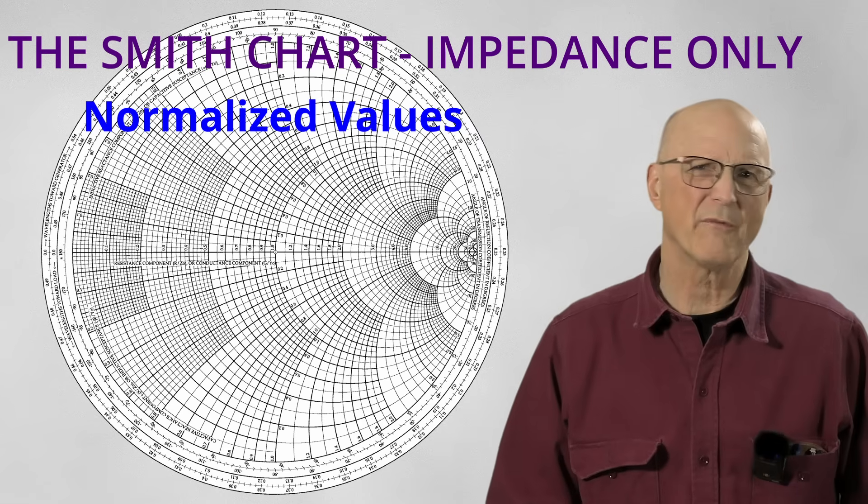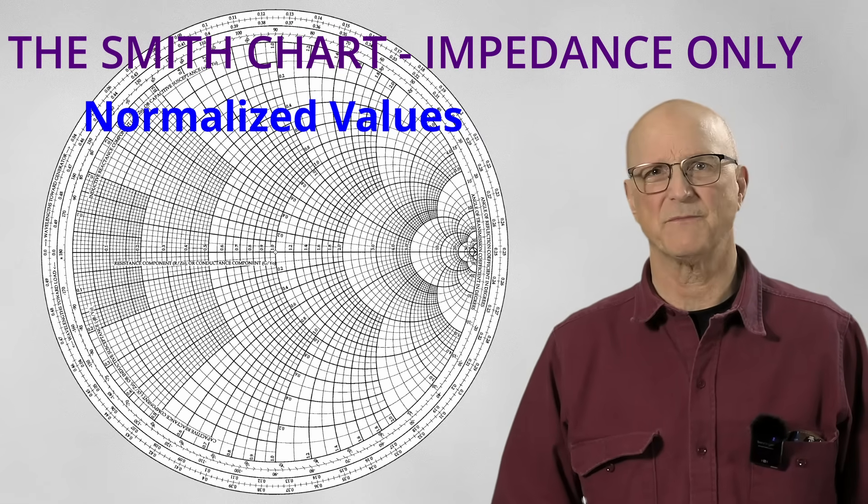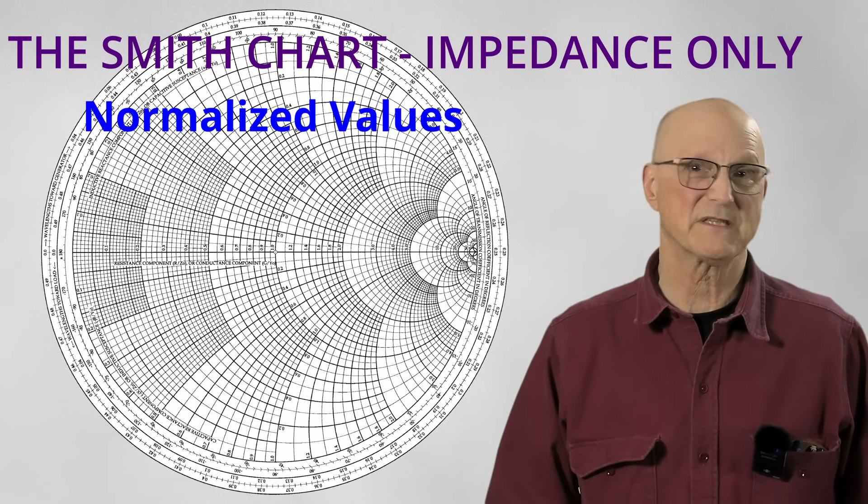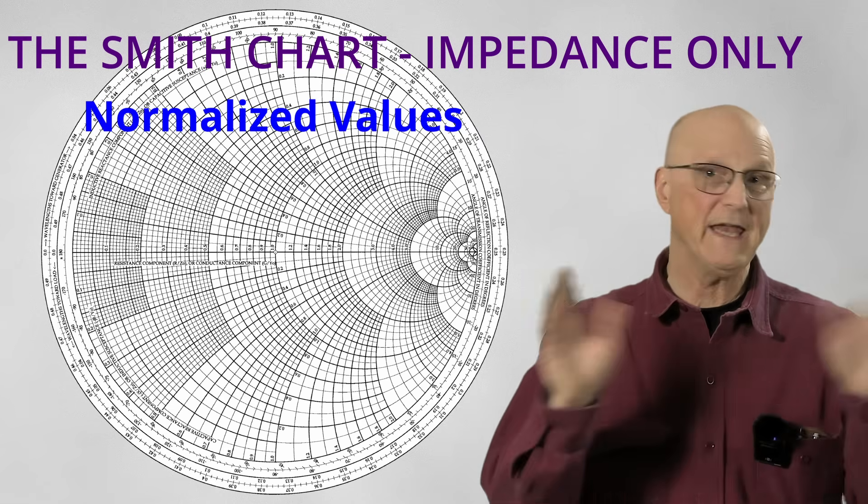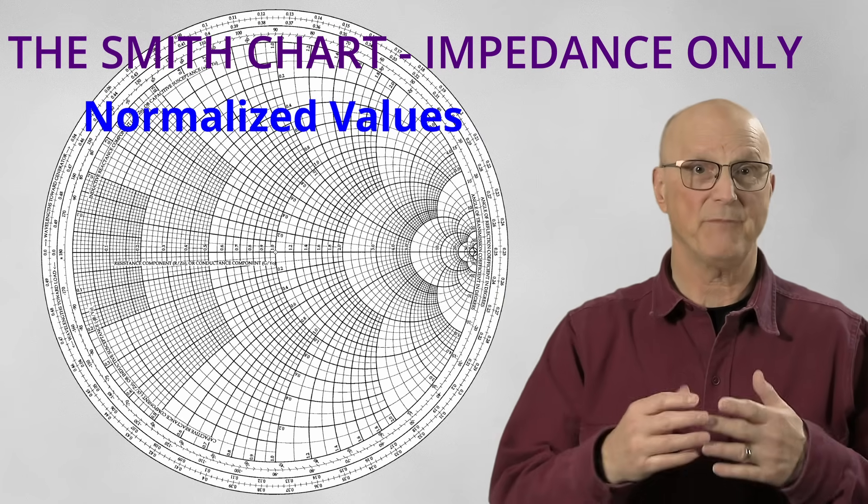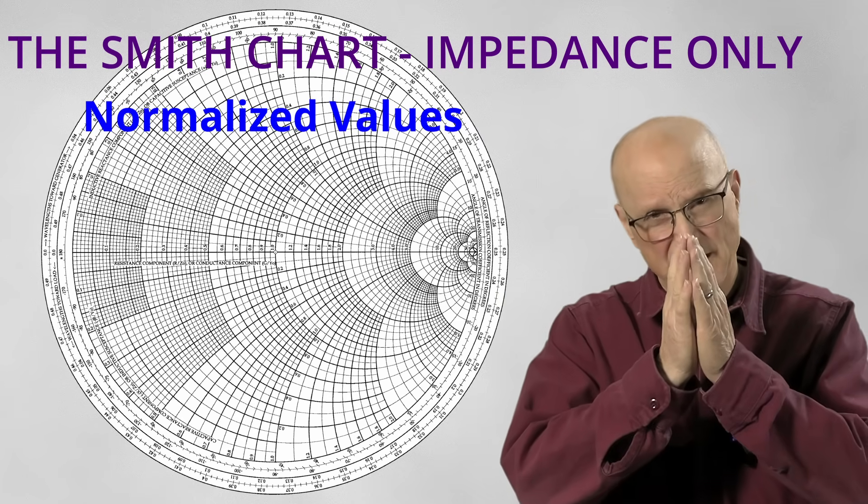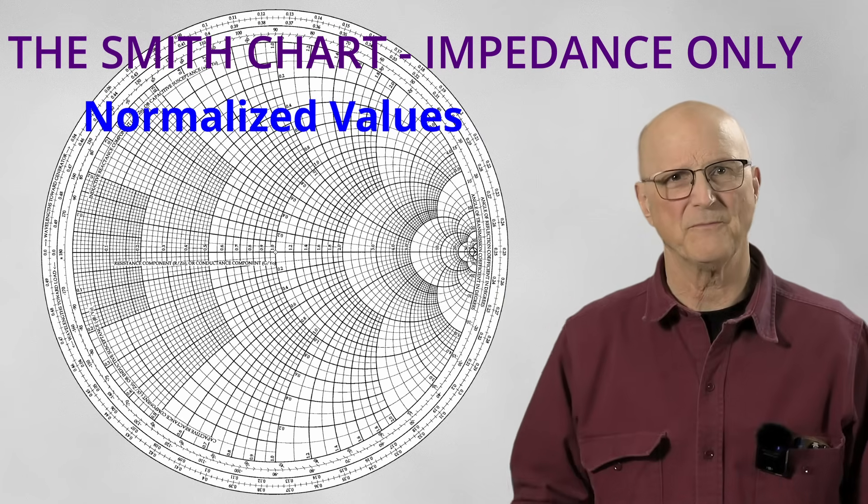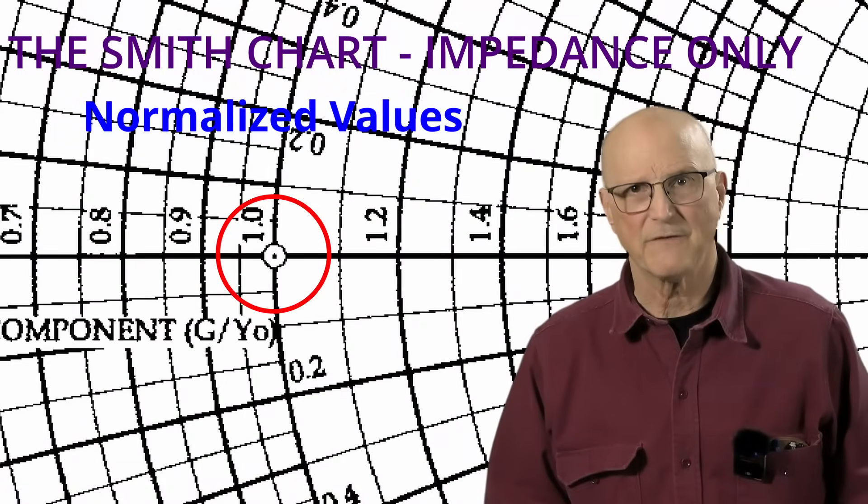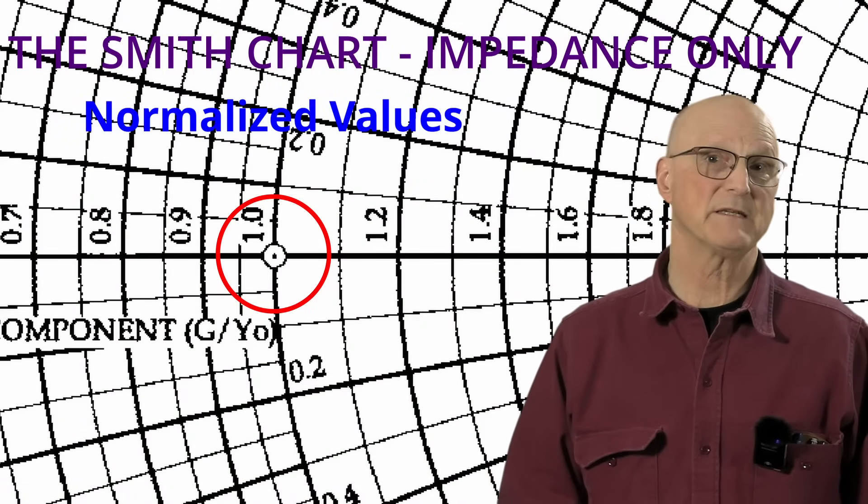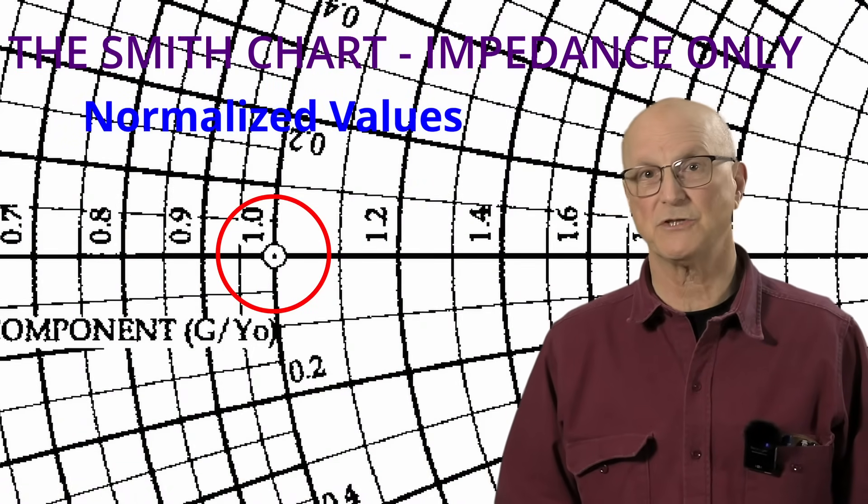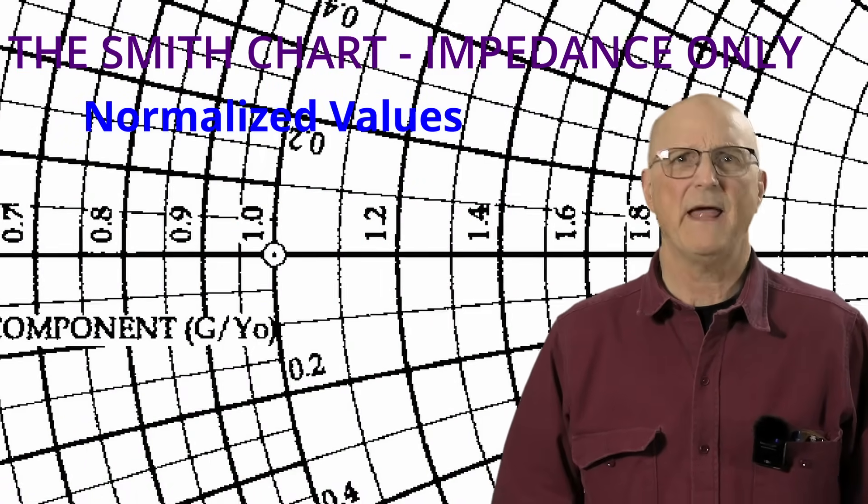Traditionally, normalized values are represented by lowercase letters. While an impedance is represented by the uppercase Z, the normalized version is represented by the lowercase z. So why do they normalize the impedance values? They do this so the Smith chart can be used for any system impedance as opposed to being tied to a particular impedance value. The very center of the Smith chart is the system impedance of 1 plus J0.